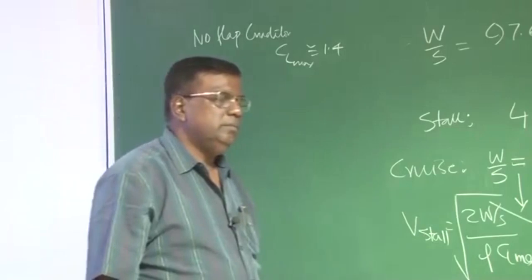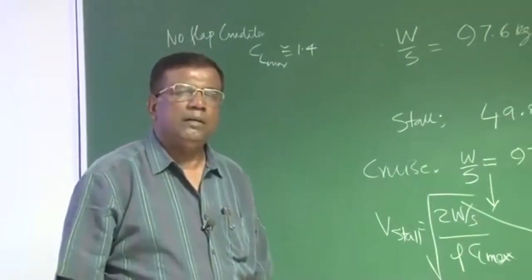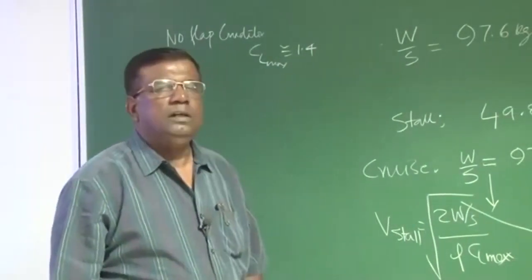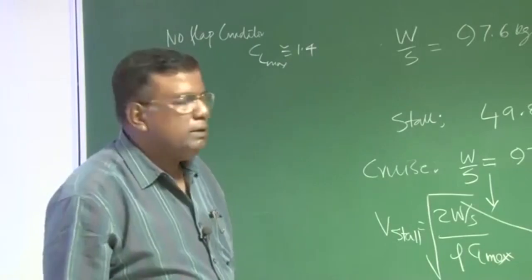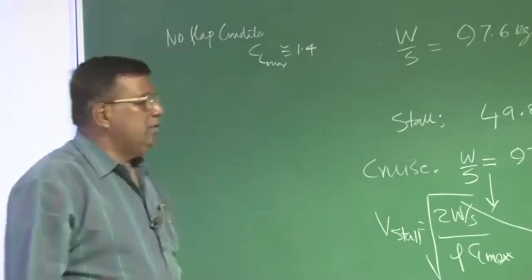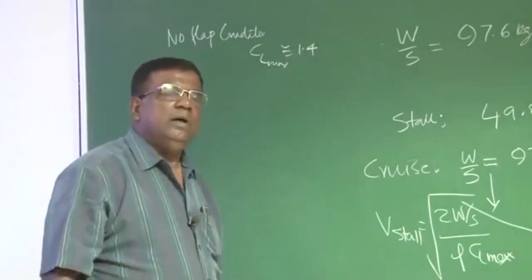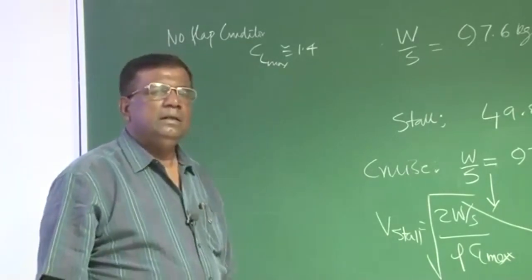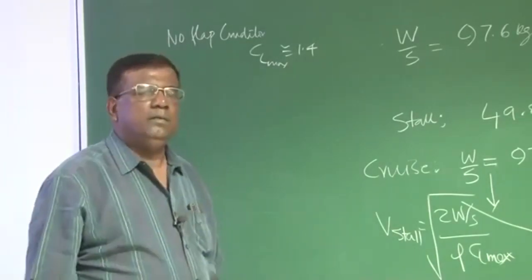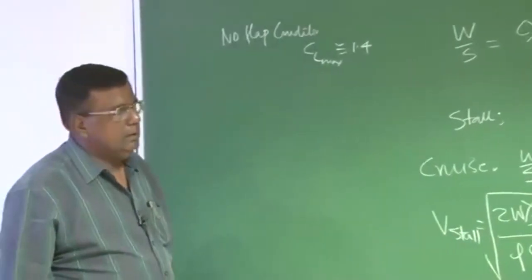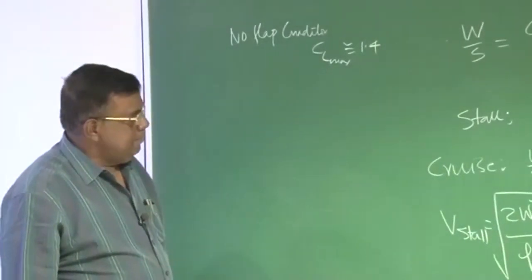But in this example, I have already assumed that there is a plain flap. Because I understand that normal airfoil, C L max of 1.2 is a good initial number to start your job. And once you use the plain flap, if you give a deflection by 10 degrees flap deflection, you can easily touch 1.4 C L max.